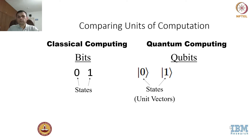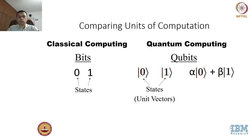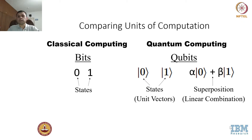A qubit can be more than 0 and 1 — it can be a linear combination of a 0 state and a 1 state. The coefficients alpha and beta in the expression alpha|0⟩ + beta|1⟩ are complex numbers. This is called a superposition state: a qubit can be in a superposition of the two basis states 0 and 1.